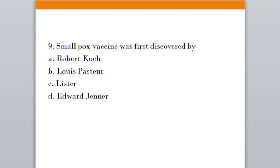Question number nine: Smallpox vaccine was discovered by. Option A, Robert Koch; Option B, Louis Pasteur; Option C, Lister; Option D, Edward Jenner. The correct answer is option D, Edward Jenner.